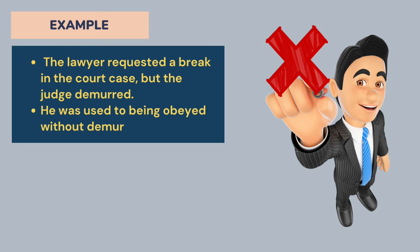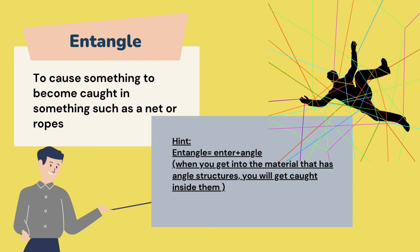The next word is 'entangled.' Entangled means to cause something to become caught in something such as a net or rope — to intervene, involve, or implicate anything within something. You can see in the diagram that a man is being entangled in ropes.